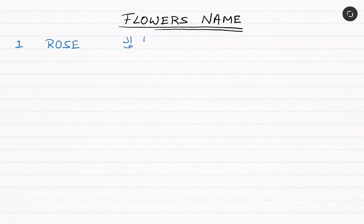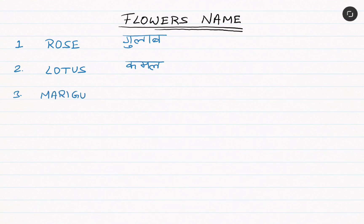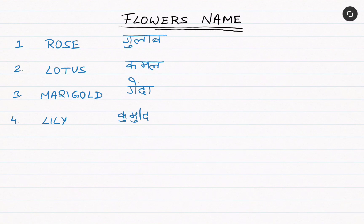The first one: rose means gulab. Second: lotus means kamal. Third: marigold means genda. Fourth: lily means kumudini. Fifth: jasmine means chameli.